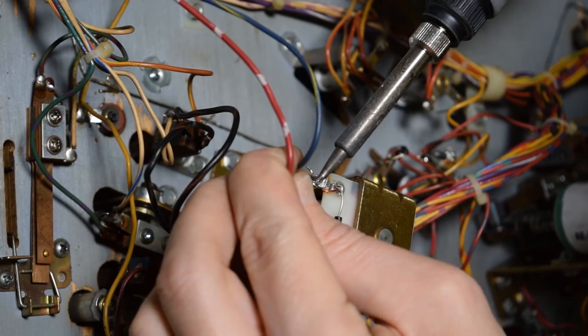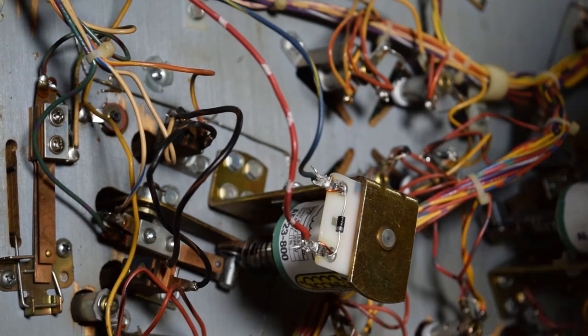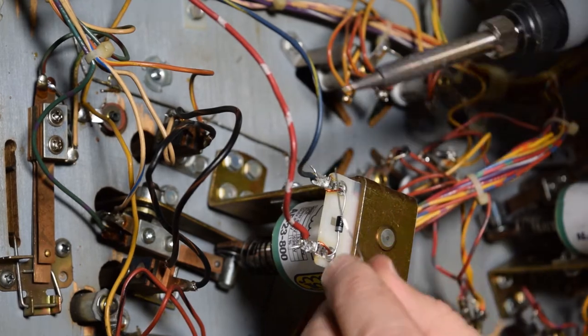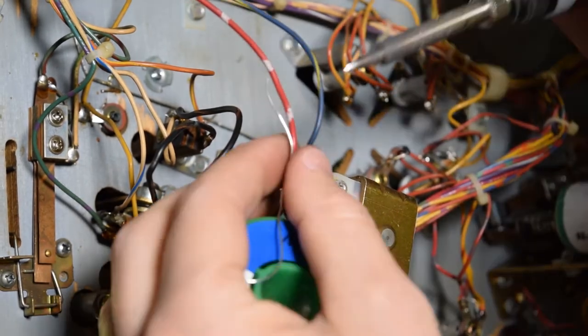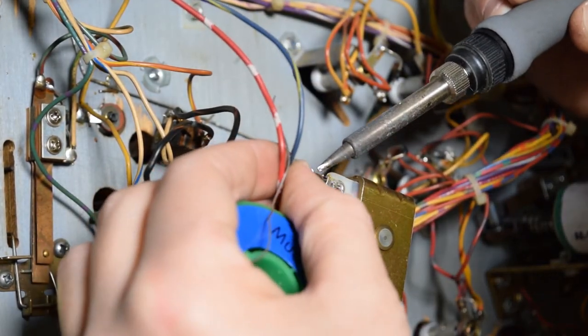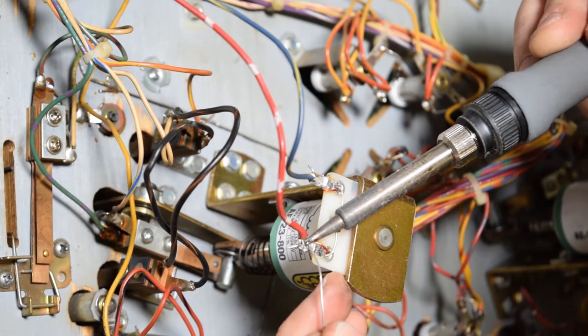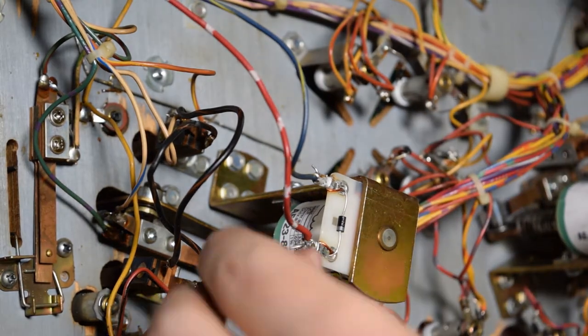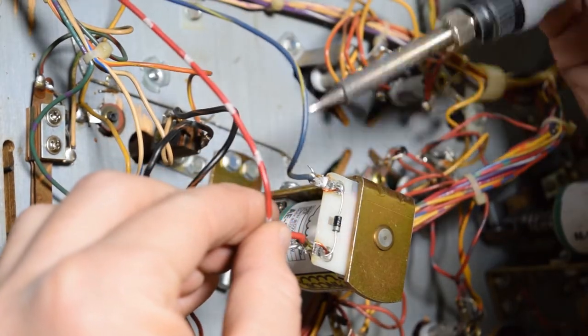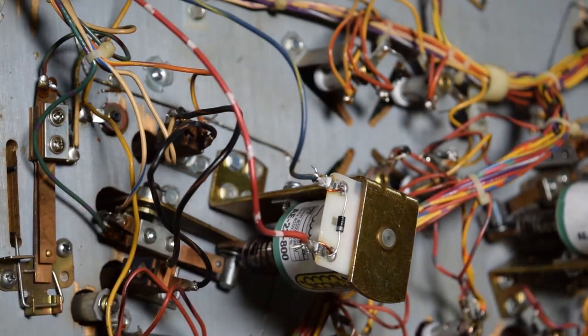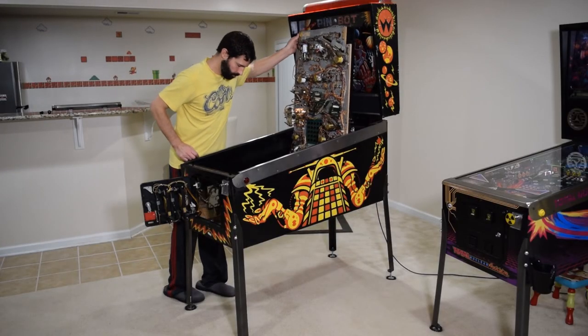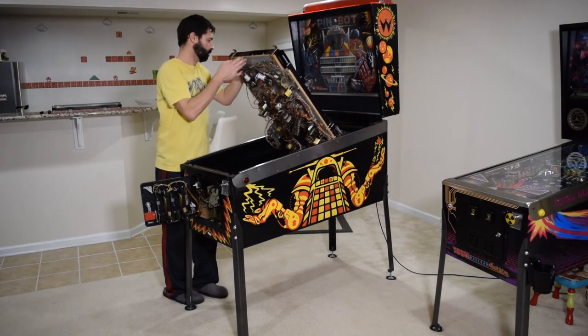If you need to, add some additional solder to the terminals. You want to make sure you have a good bond between the wires and the terminals. Once you have a good connection, use some wire cutters and snip off the excess diode wire. With the new coil installed, go ahead and completely lower the playfield.